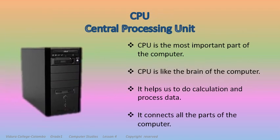CPU. C for central, P for processing, U for unit. CPU stands for central processing unit. CPU is the most important part of the computer. CPU is like the brain of the computer. It helps us to do calculations and process data. CPU connects all the parts of the computer.